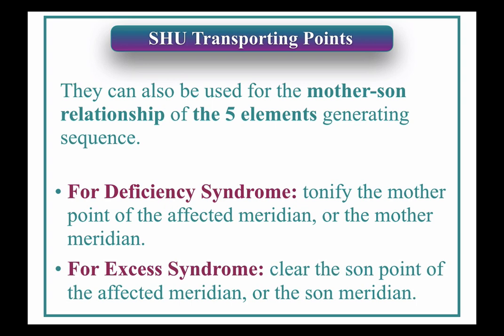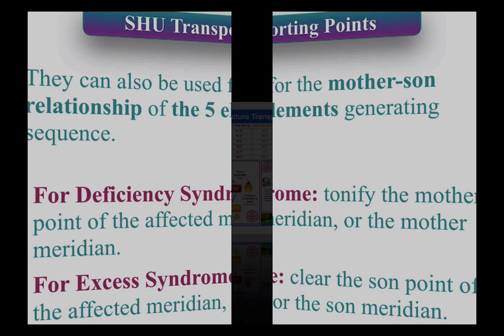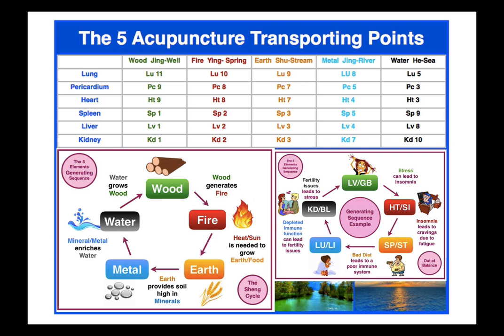Let me give you examples because that's the best thing to do. Here's a table with all the acupuncture points on the yin meridians. You have wood, which is the Jing Well points; fire, which are the Ying Spring; earth, the Shu Stream; metal, the Jing River; and water, the He-Sea points. That way you can see the five elements connecting to the five Shu transporting points. Below that is the generating sequence: wood generates fire, earth, metal, water.